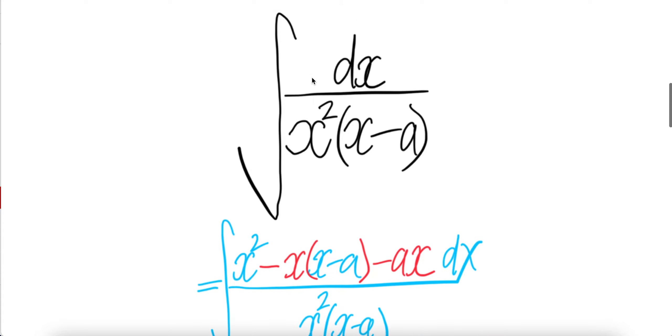There's a hidden one here. We write that one in terms of a combination of these expressions. Let us write x squared here and then put (x minus a).